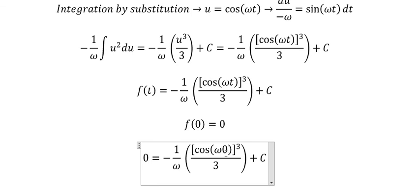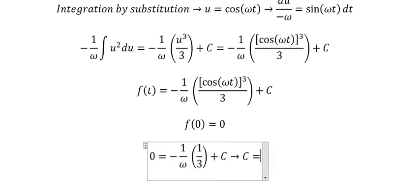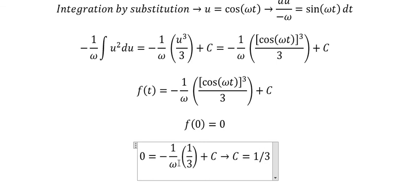cos(ω·0) = cos(0) = 1, so we get 0 = −(1/ω)(1³/3) + C, which gives C = 1/(3ω).